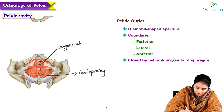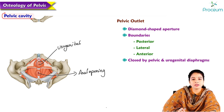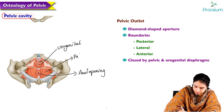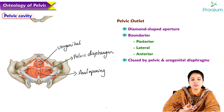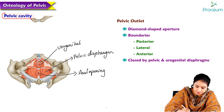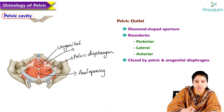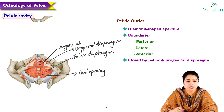In females, there are openings for the vagina and urethra. The anal opening is surrounded by the pelvic diaphragm, which forms the floor of the pelvis and prevents prolapse of pelvic organs. Anteriorly, the structures are surrounded by the urogenital diaphragm.